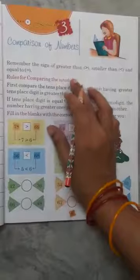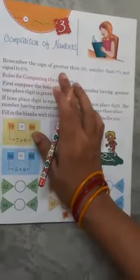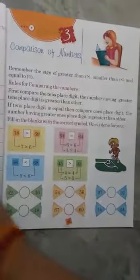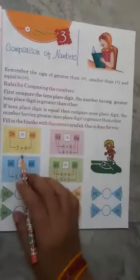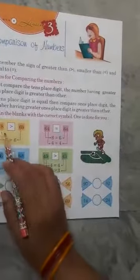Remember the sign of greater than, smaller than, and equal. You have already studied this before. Fill in the blanks with the correct symbol. One is done for you. This is shown to you, okay, you will do it in this way.